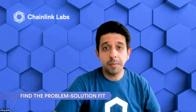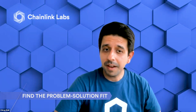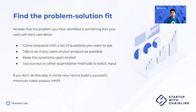The next step is finding a problem-solution fit, which is all about validating that the problem you have identified is something your users will really care about and that your solution addresses. If you don't do this step, it will be very hard to build a successful MVP. To validate problem-solution fit, talk to as many users as you can, and make sure to write down open-ended questions to remove any bias.